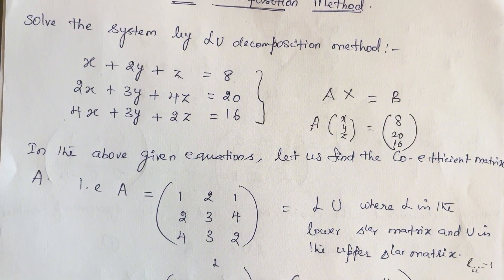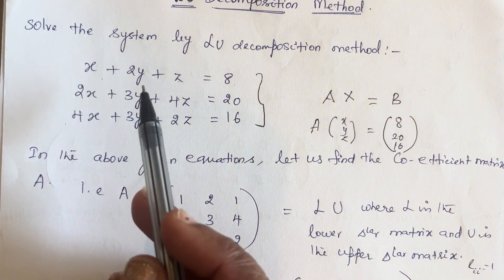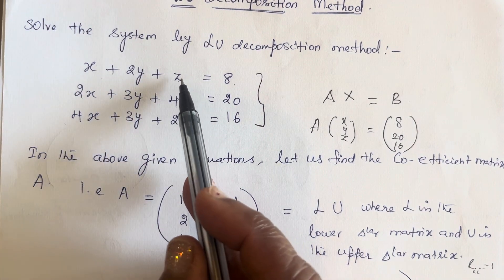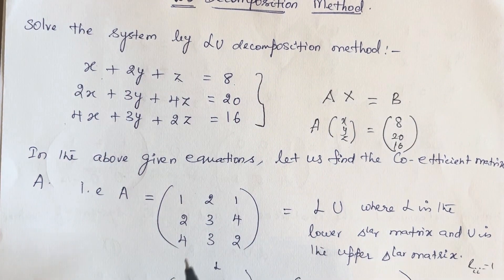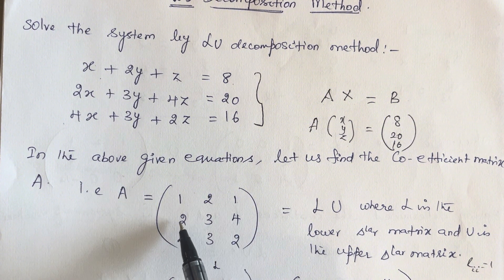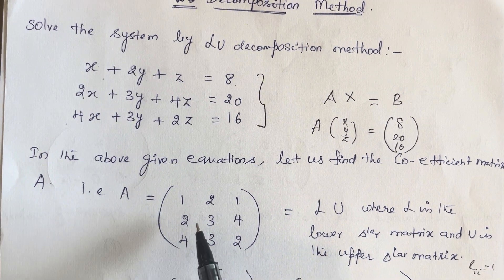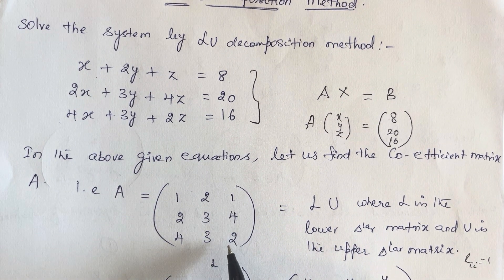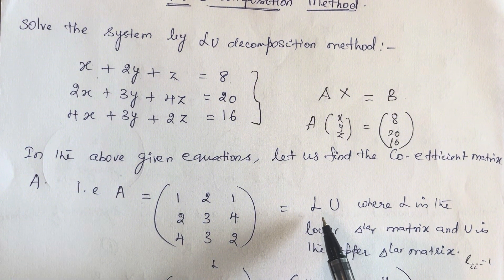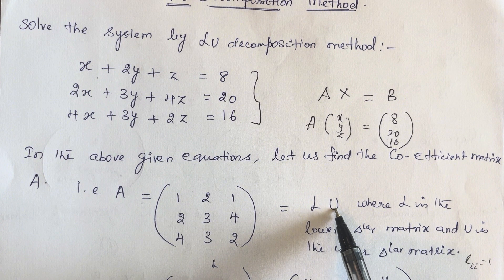A is equal to the coefficient matrix: the first row is 1, 2, 1 — that is coefficient of x is 1, coefficient of y is 2, and coefficient of z is 1. For the second equation it is 2, 3, 4, and the third equation is 4, 3, 2. So A equals the 3×3 matrix [1, 2, 1; 2, 3, 4; 4, 3, 2], which we are equating to LU, where L stands for the lower triangular matrix and U stands for the upper triangular matrix.